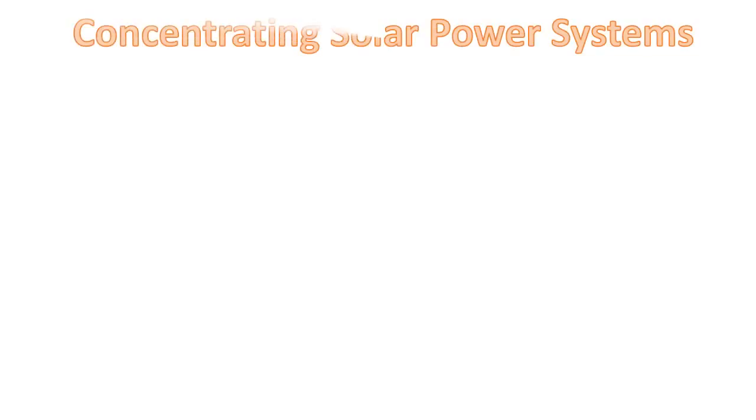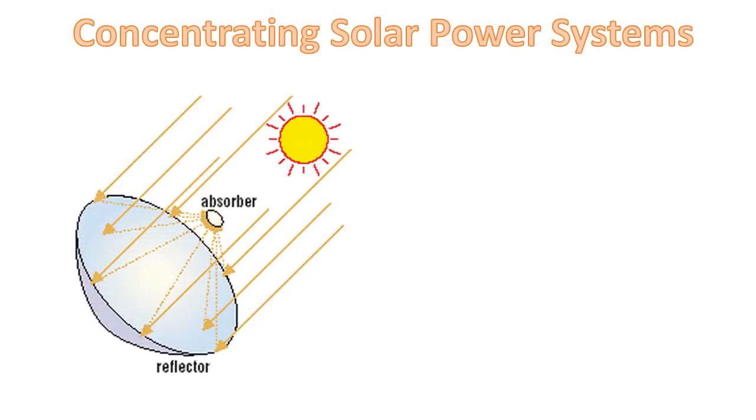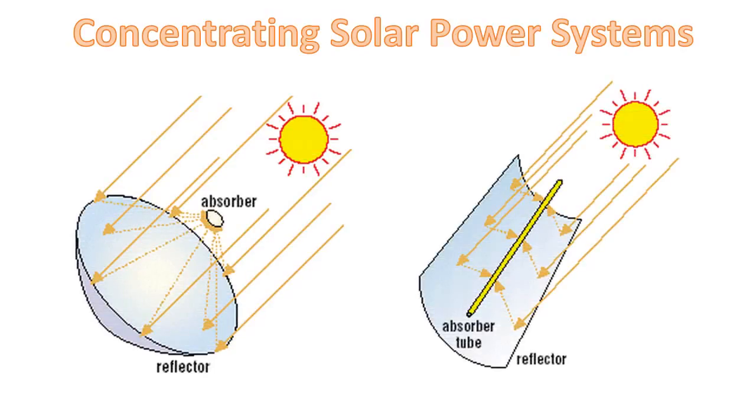A concentrating solar power system uses mirrors or lenses to reflect and concentrate sun rays towards a receiver tube located at the focus line of the parabolic cylinder. The receiver absorbs the incoming radiations and transforms them into thermal energy.